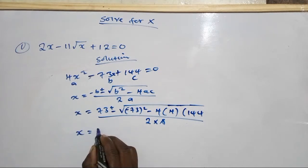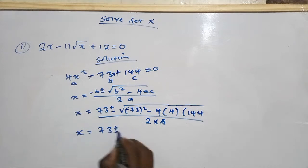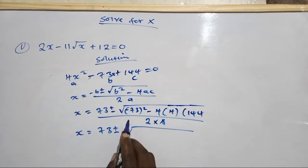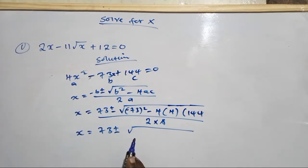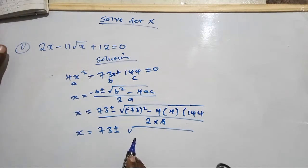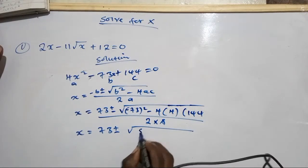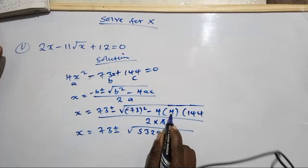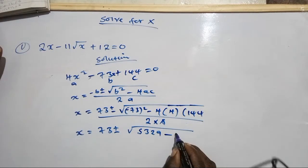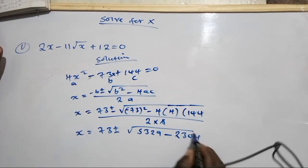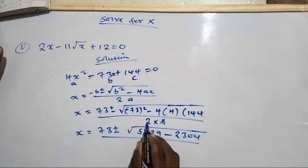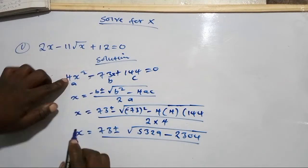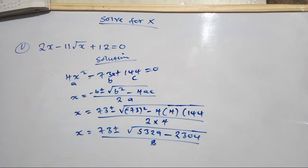So x equals 73 plus or minus the square root of 73 squared minus 4 times 4 times 144, divided by 8. Now 73 squared gives 5329, and 4 times 4 is 16, and 16 times 144 is 2304.